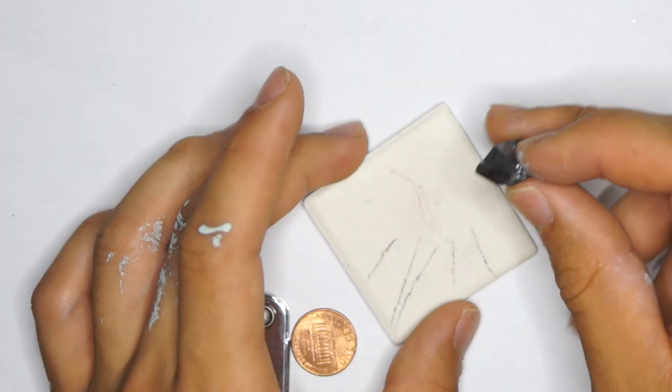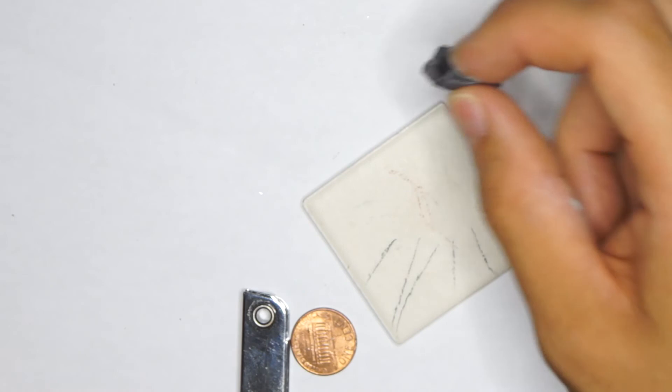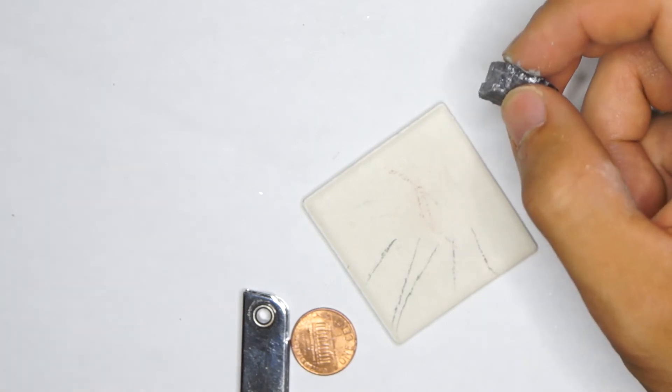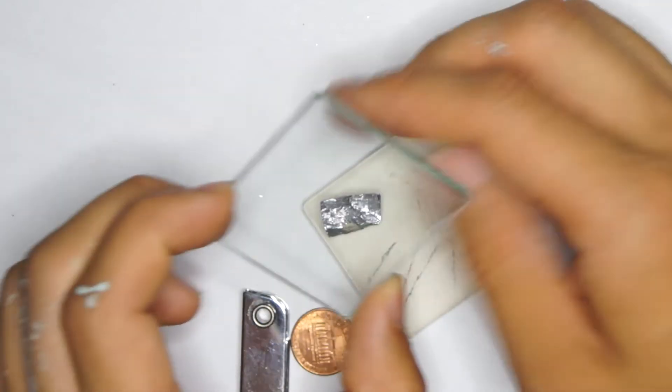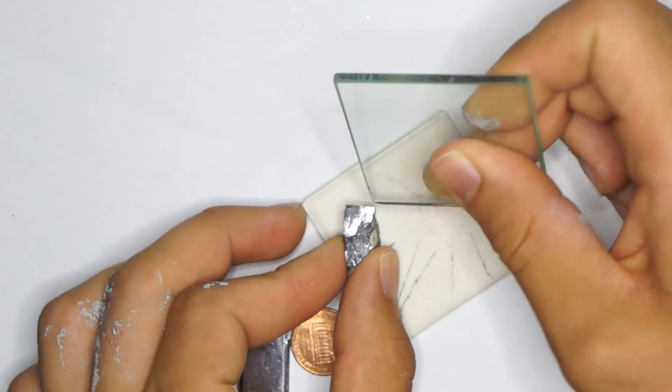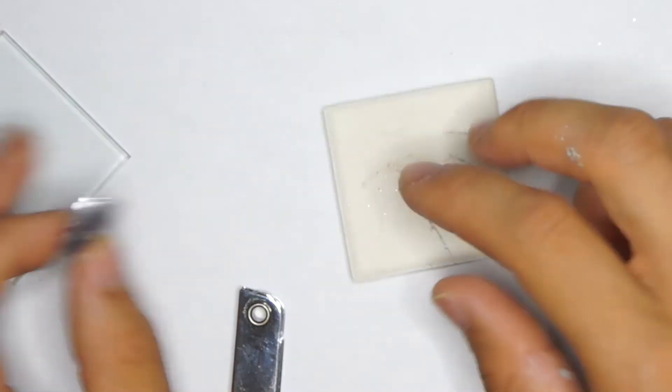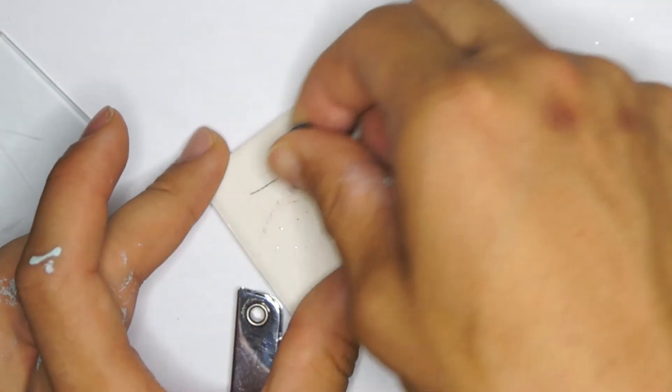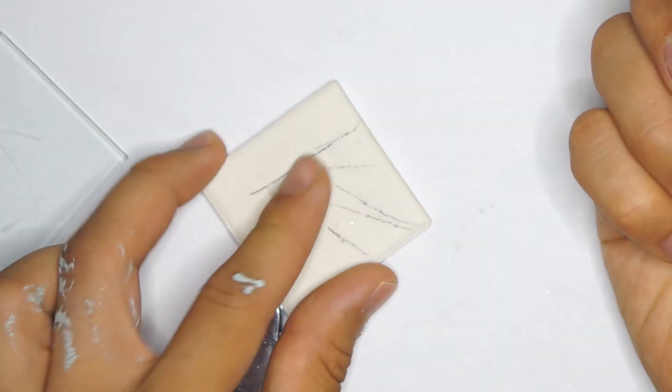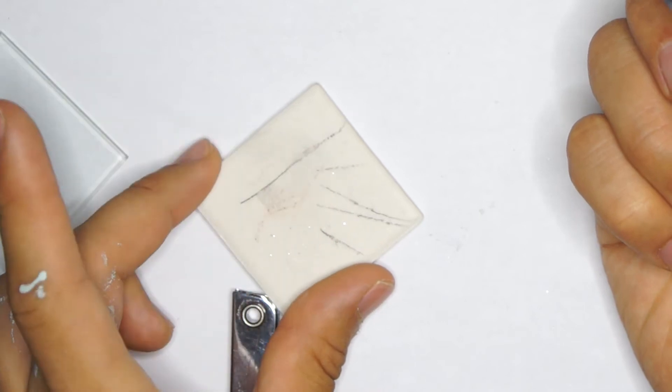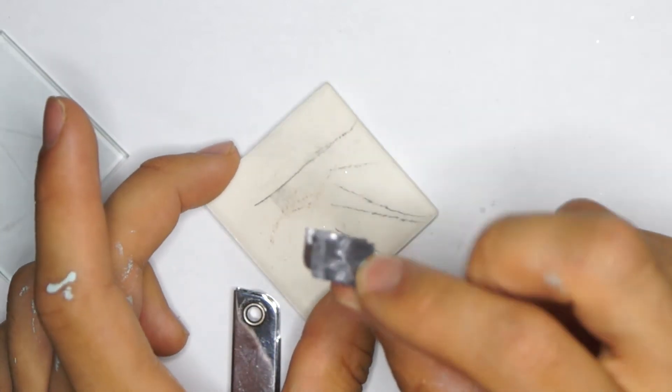Another way to tell hardness is if it leaves a streak on the streak plate. If a mineral leaves a powdered trail of itself, that means it's softer than the plate, so this is still softer than 7 as we expected.